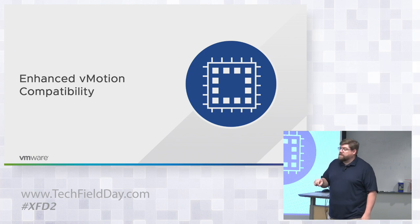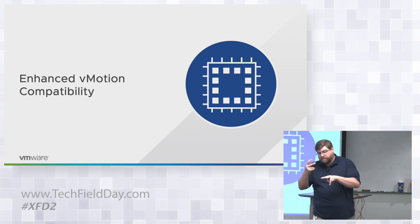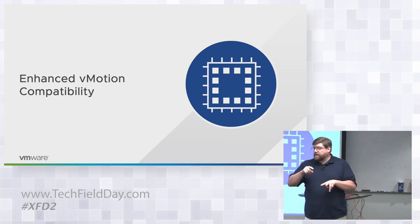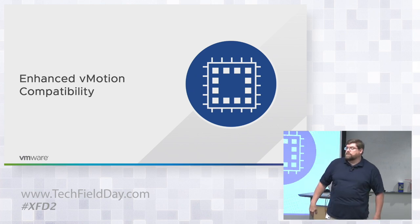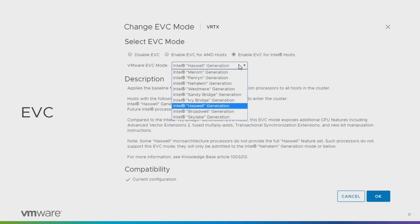There's also per-VM EVC. My lab has two boxes with Haswell CPUs and two with Broadwell. Broadwell added RD-RAND and RD-SEED instructions, which are really interesting for randomness and entropy. When I want to play with that, I can set the per-VM EVC mode on a specific VM to Broadwell and it'll stay in my two Broadwell hosts. At the cluster mode, you can just pick Intel or AMD. EVC does not help you move between CPU manufacturers — stay within the same vendor. Can you mix them in a cluster? Yeah, but is it a good idea? Probably not.